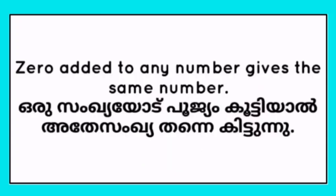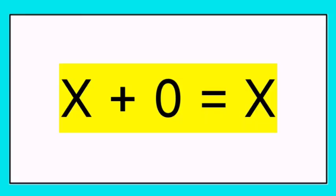Zero added to any number gives the same number. In algebra: x + 0 = x. We call it algebra — using the variable x to represent any number.